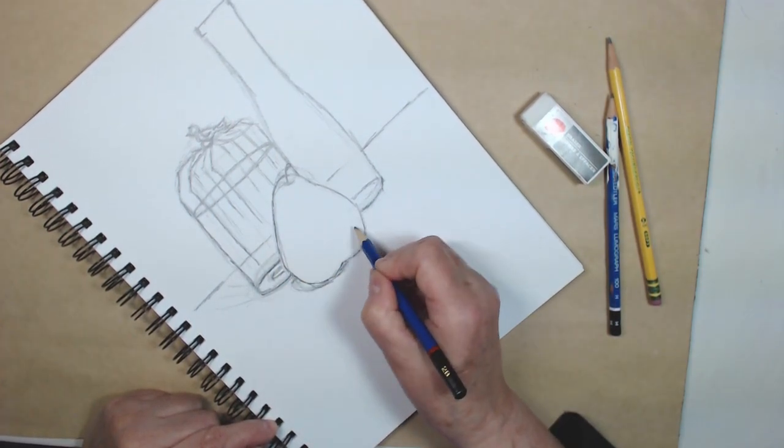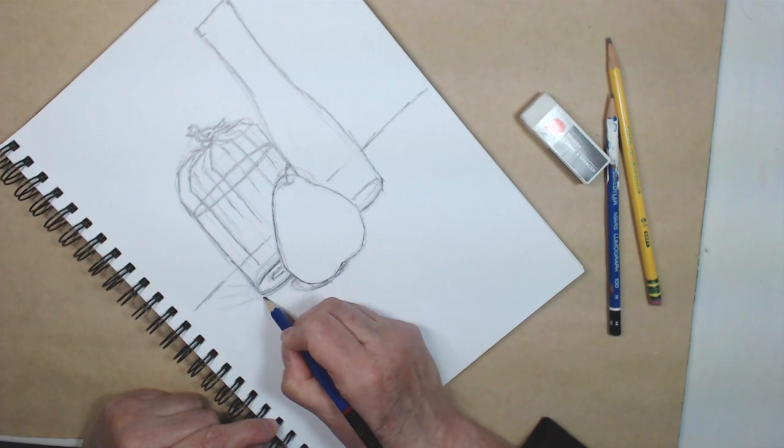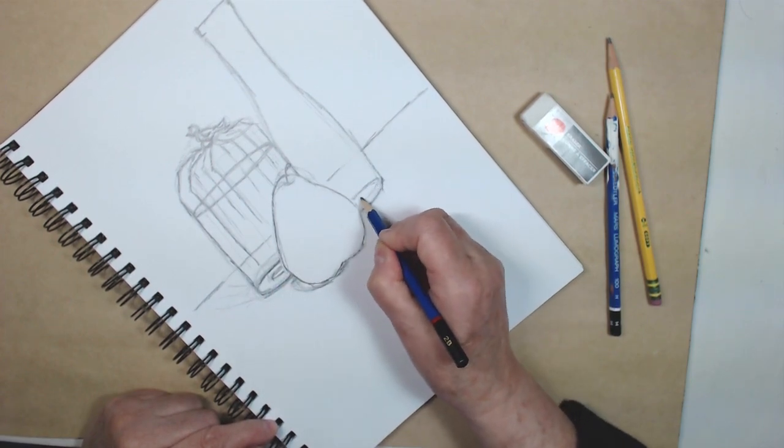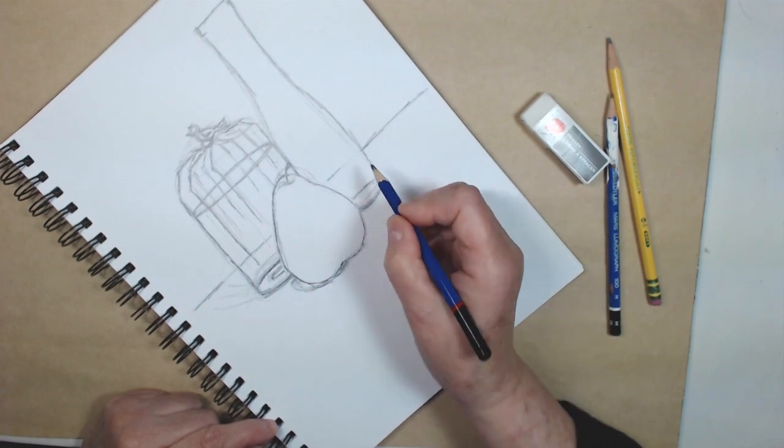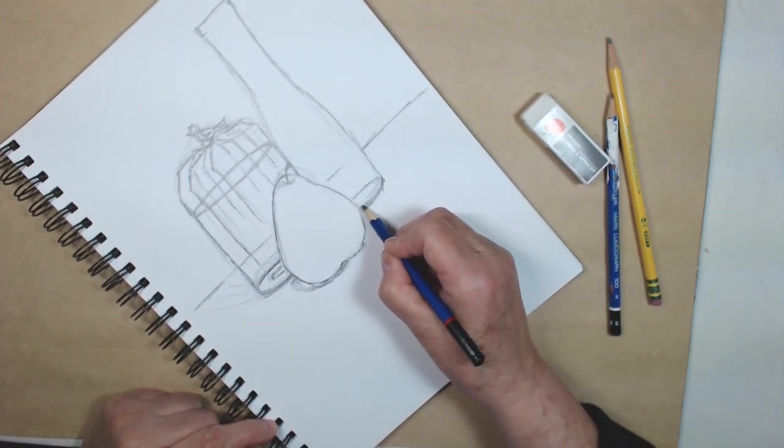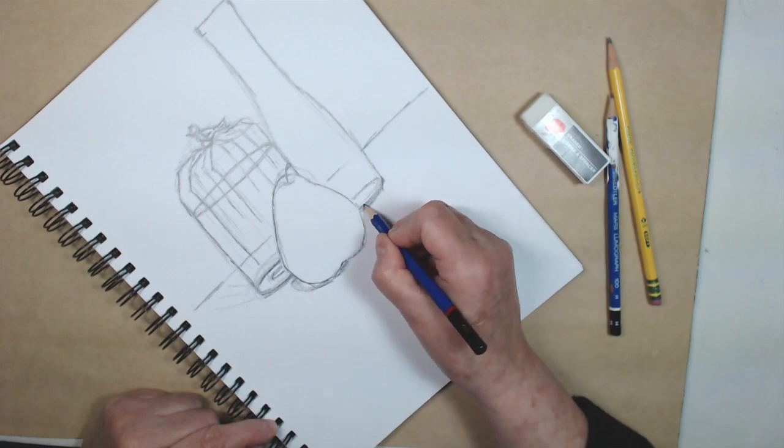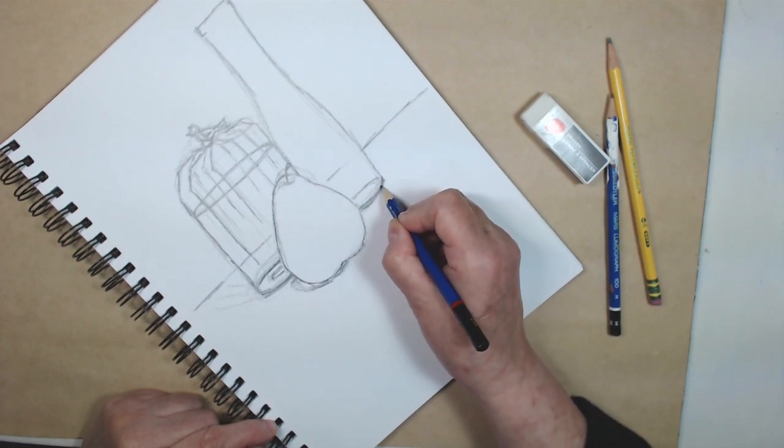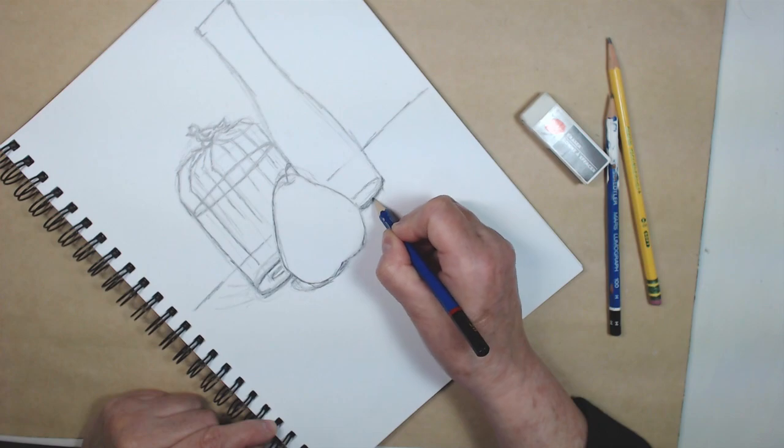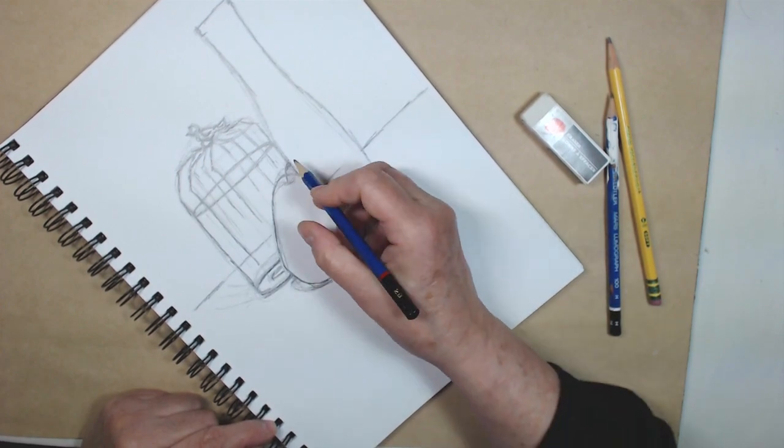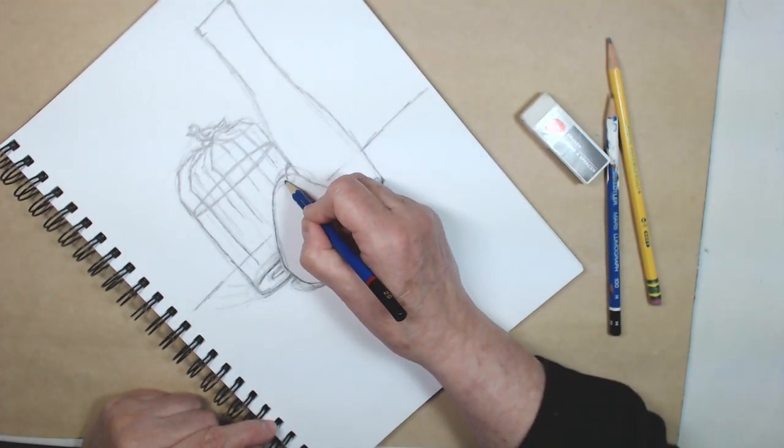And the birdcage have kind of ellipses at the bottom here. Kind of gets lost, that edge kind of gets lost in the cast shadow.